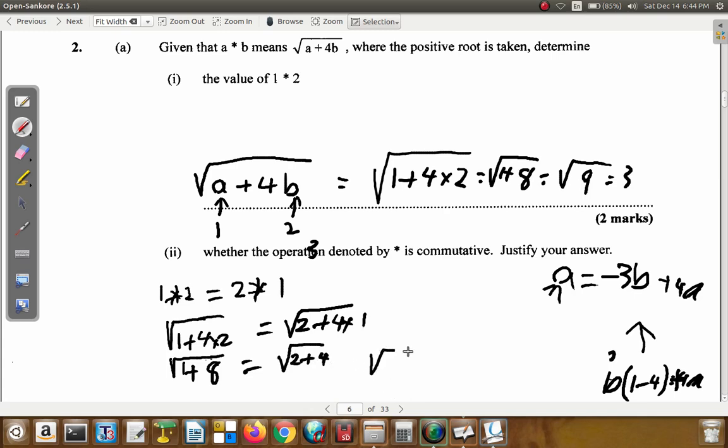Now, this is 1 plus 8 is 9, as we saw earlier. Is it equal to 4 and 2, 6. Clearly, they are not equal. Because, when you find the square root of 9, you get 3. And, 3 is not equal to the square root of 6. So, 3 is not equal to the square root of 6.